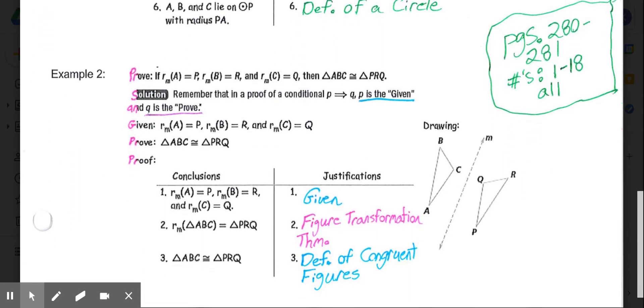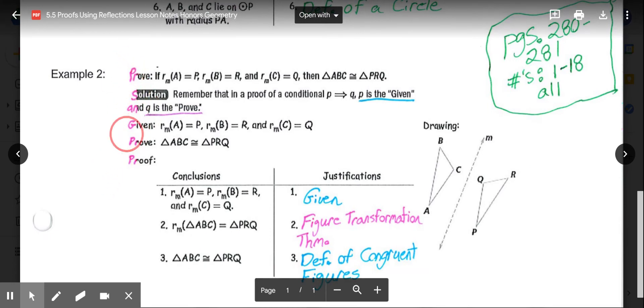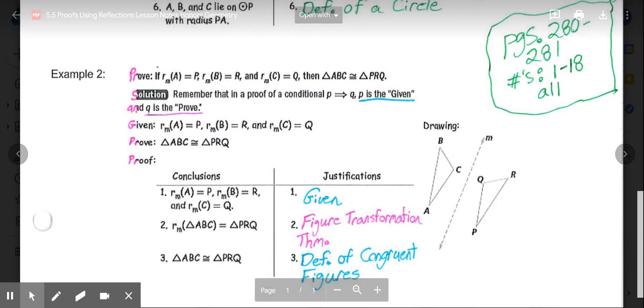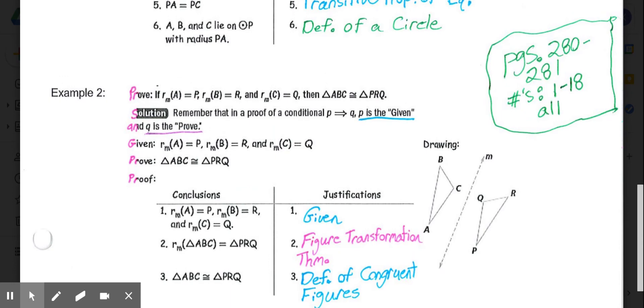Then example two. Apologies that some of these first letters got cut off. So what they're asking us to do in example two is to prove the following. What it's saying is that point A reflected over line M was point P, point B reflected over line M was R, and point C reflected over line M was Q. Then, triangle ABC is congruent to triangle PRQ. That's what they want us to prove.